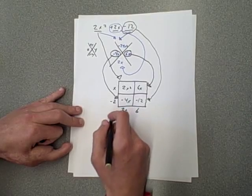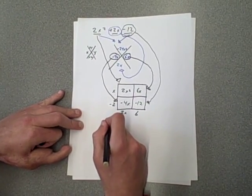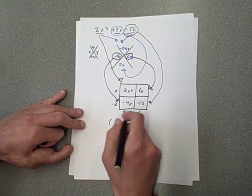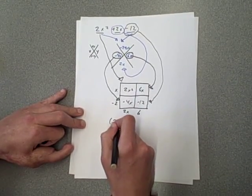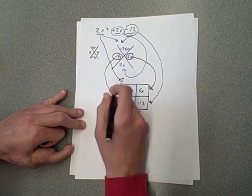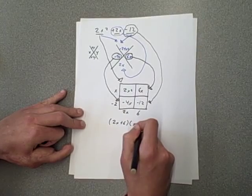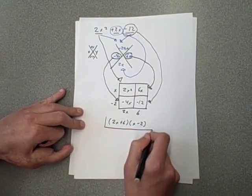And we can use that now to solve it and put it in factored form. So we know the length of the box is 2x plus 6, and the width of the box is x minus 2. And that is our finished answer.